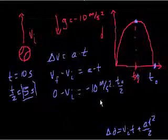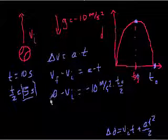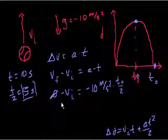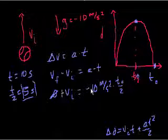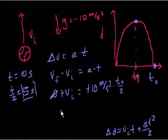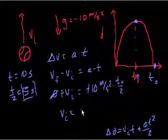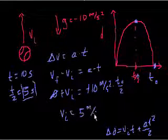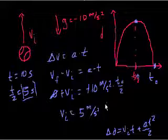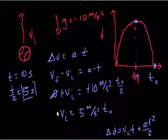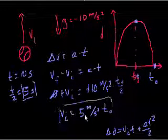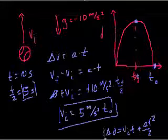So once again, we have, let's see, the 0 doesn't matter. We can multiply both sides times negative 1. We get plus v_i, and we get v_i is equal to 10 divided by 2, 5 meters per second squared times t sub 0, which was exactly what we got in the previous video when we used this formula.